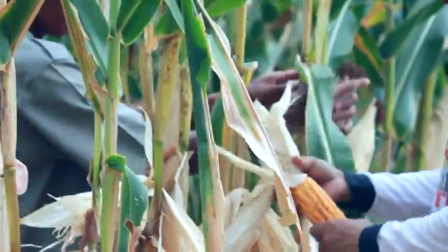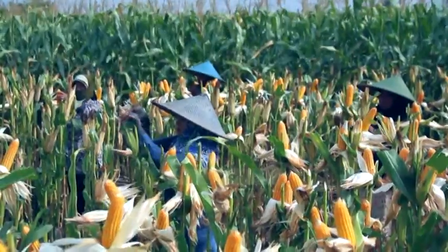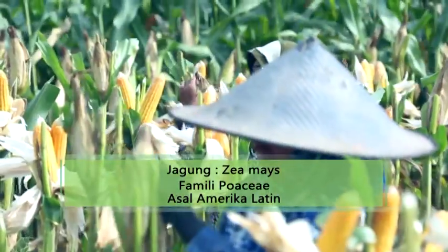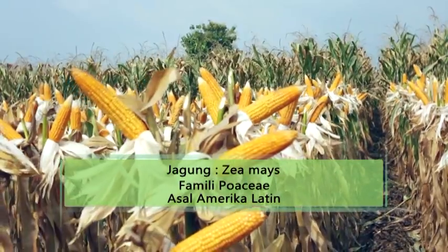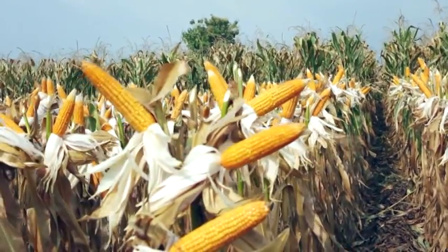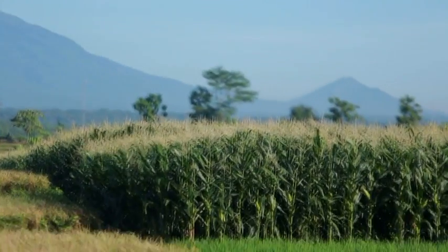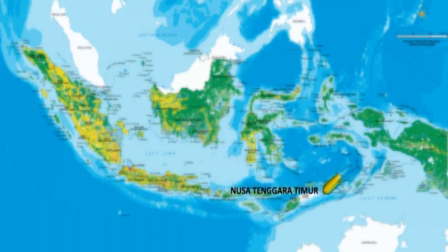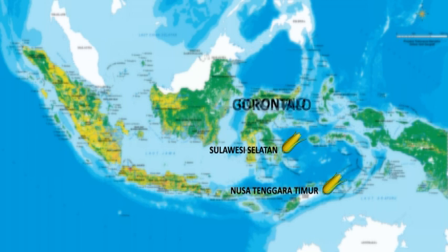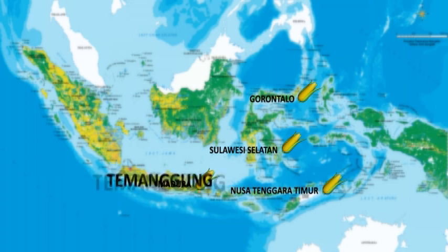Jagung yang memiliki nama latin Zea mays termasuk ke dalam famili Poaceae dan berasal dari Amerika Latin. Tanaman jagung di Indonesia banyak terdapat di wilayah Provinsi Nusa Tenggara Timur, Sulawesi Selatan, Gorontalo, Provinsi Jawa Timur di daerah Madura, dan di Jawa Tengah tepatnya di Kabupaten Temanggung.